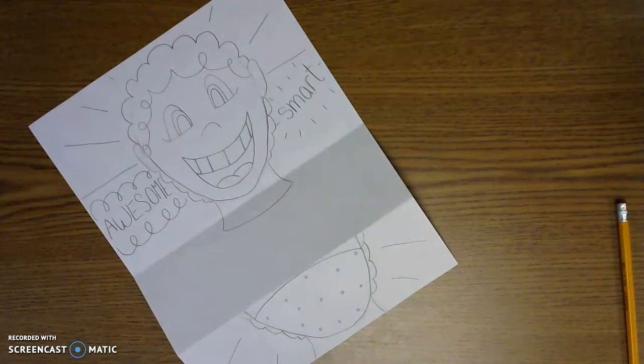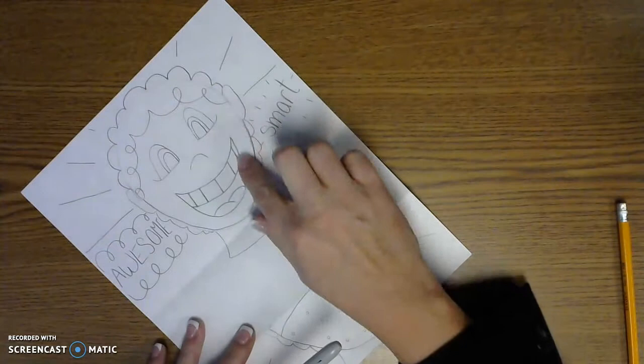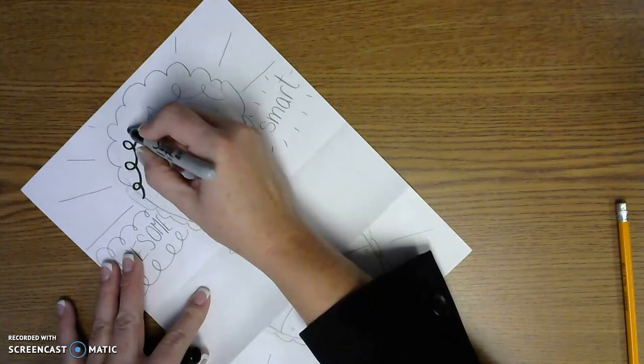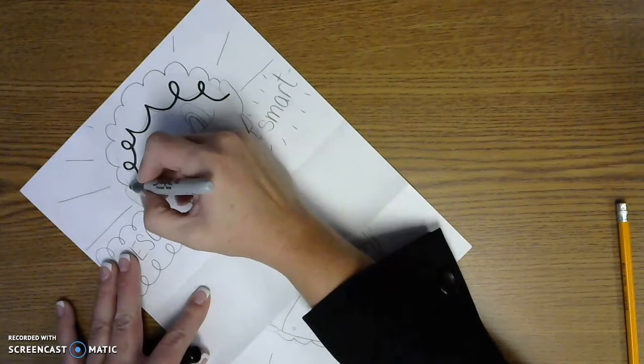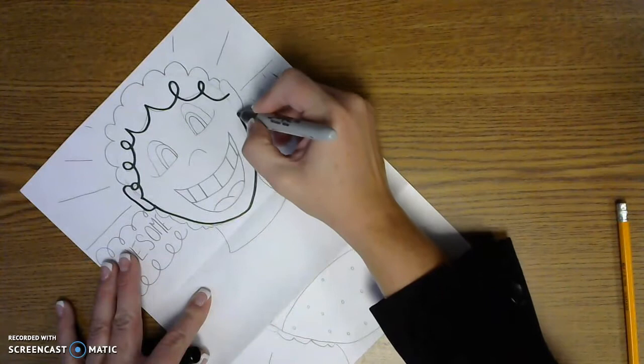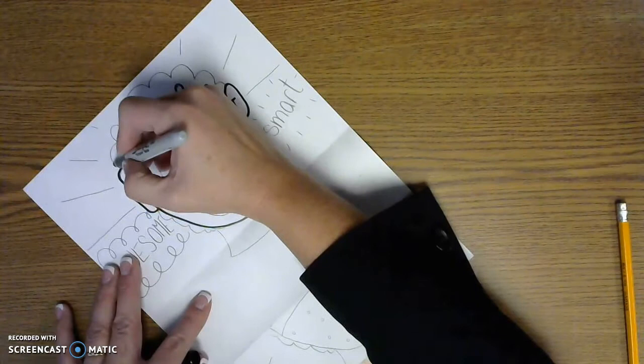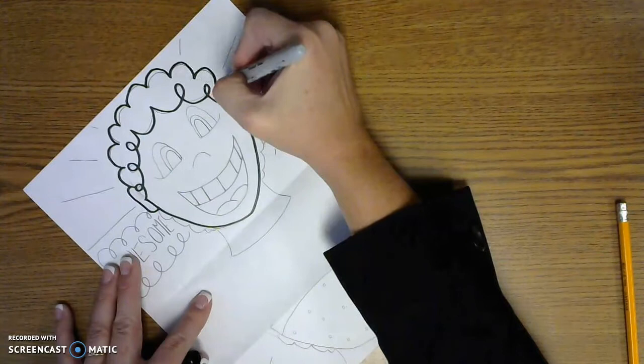And then you're going to take a marker. You can do it with marker, you can do it with pencil. But I want you to darken in your lines that you had done with pencil. And do your picture.